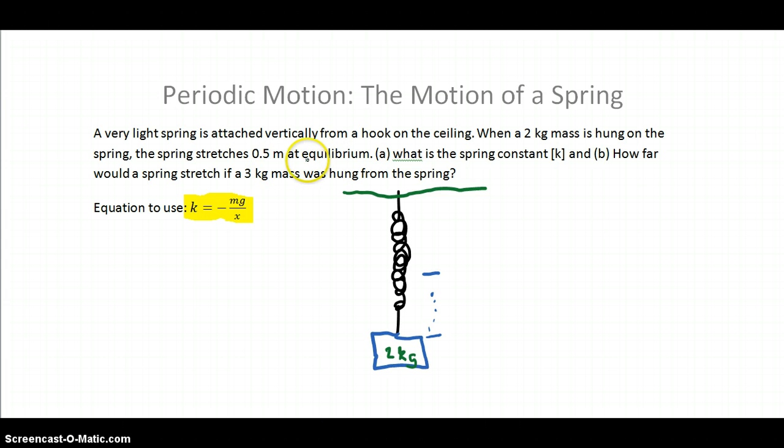Let me remind you, equilibrium means, essentially, whenever you hang a box on the spring, it's going to oscillate up and down for just a minute. Equilibrium is just saying that once it's done oscillating and it's totally standing still, at that point it's at equilibrium. Once it's at equilibrium, the top of the box was right here, now the top of the box is here. That distance, stated in the problem, is 0.5 meters.